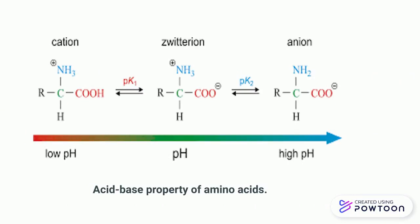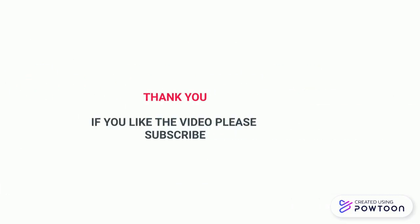If the medium is acidic, that is it has a low pH, then the amino acid is positively charged. If the medium is basic, that is it has a high pH, then the amino acids are negatively charged. This is all about the general introduction of amino acids. Thank you, students.